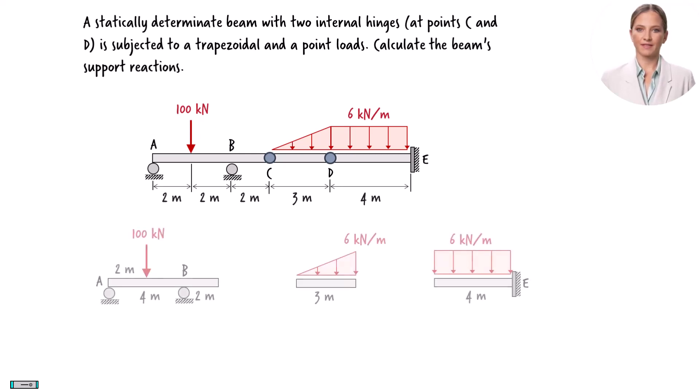We start by splitting the beam at the hinges and show its internal forces. At each hinge, there is an axial force and a shear force. The bending moment at the hinge is zero. To correctly draw these internal forces, we must show them acting at the left and right sides of each hinge.